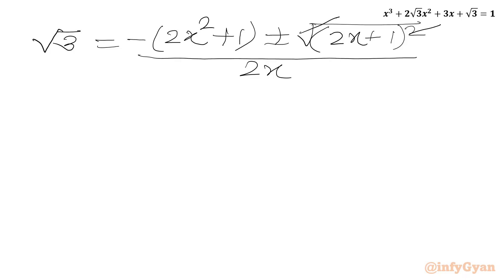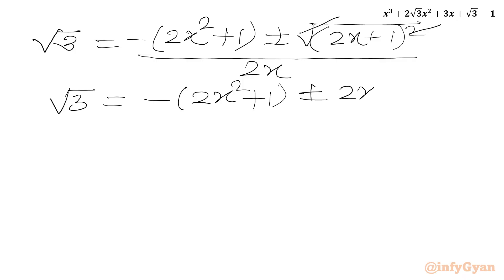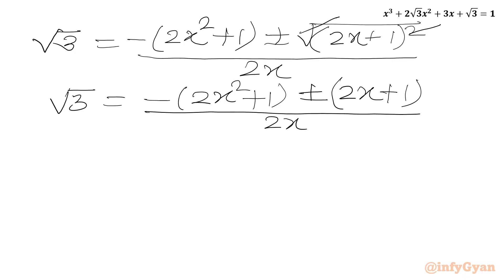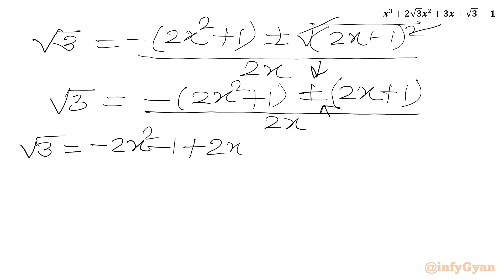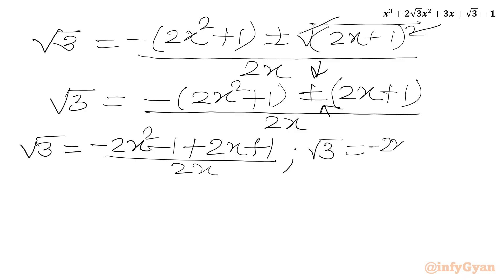We will now write two equations from the ± sign. With the plus sign: √3 = [−(2x² + 1) + (2x + 1)] / (2x), which simplifies to (−2x² + 2x) / (2x). With the minus sign: √3 = [−(2x² + 1) − (2x + 1)] / (2x), which gives (−2x² − 2x − 2) / (2x).